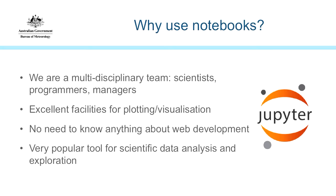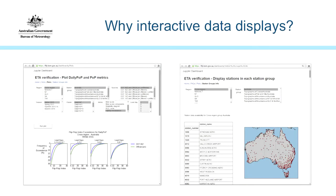Scientists can pull data in notebooks, do data analysis and visualization, and may then want to share that. The problem is notebooks — you can export a notebook as HTML or PDF, but that's a static representation. The data we're dealing with is very multidimensional. This is an example of one of the dashboards we created — it has seven drop-down boxes which add up to 327,000 plots. To put that in one static notebook is not practical, so we need people to be able to explore the data interactively.